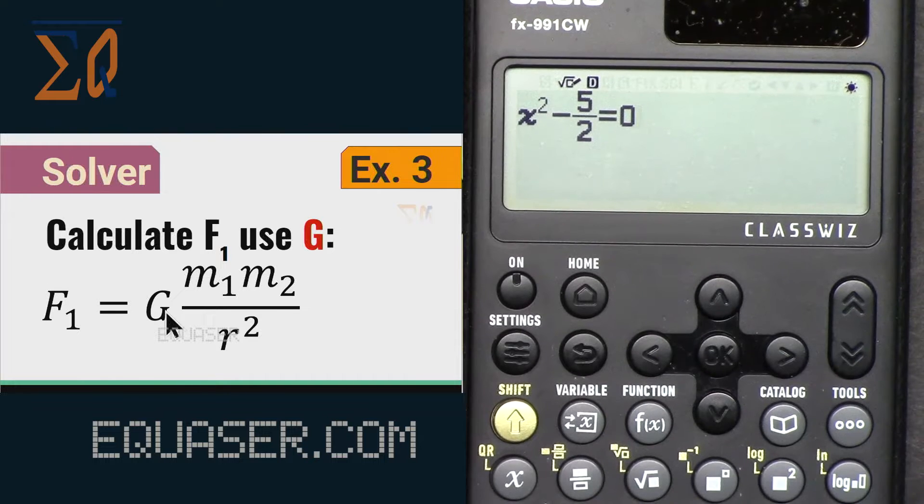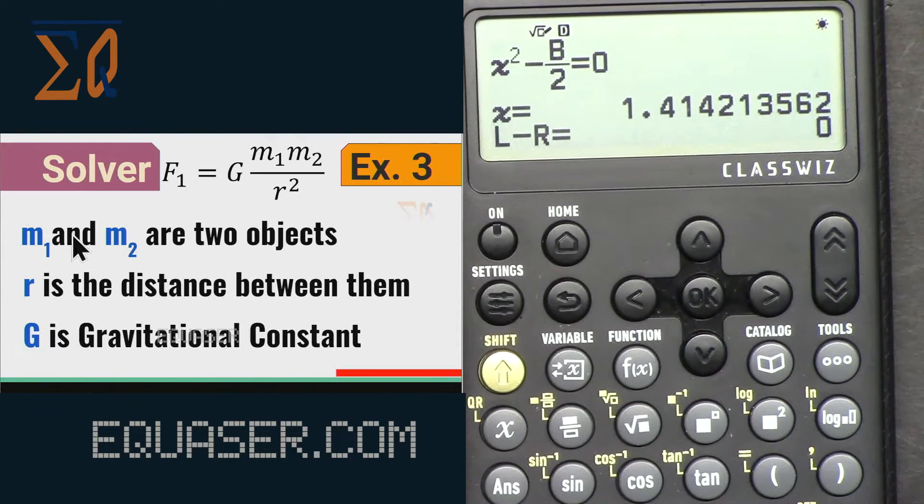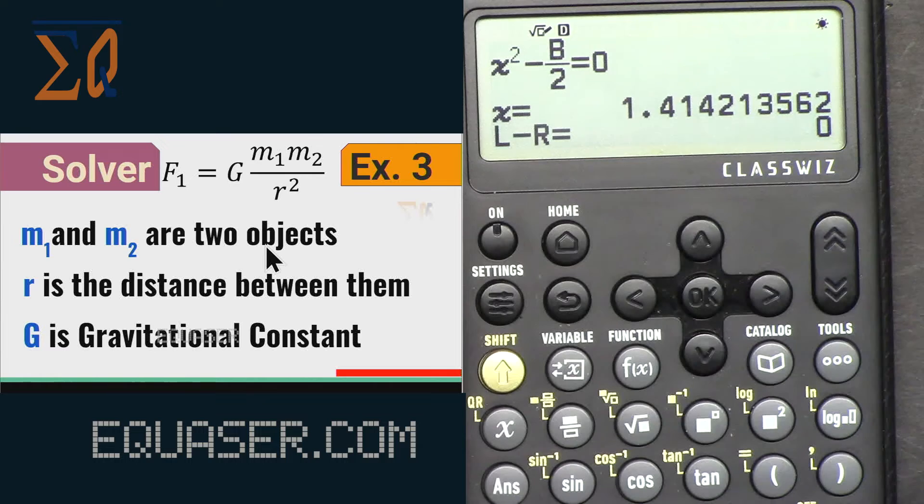Here, for example, this is the gravitational formula. The amount of force between two planets or two objects is this formula: gravitational constant times m1 m2 divided by the distance between them or radius of two objects. This is Newton's gravitational formula. We want to solve for r using g and all the values will be available. M1 and m2 are two objects, the mass of the objects. R is the distance between the two objects and g is a gravitational constant.